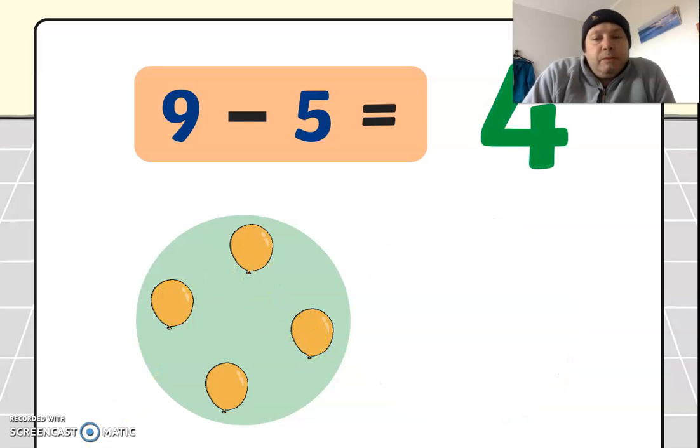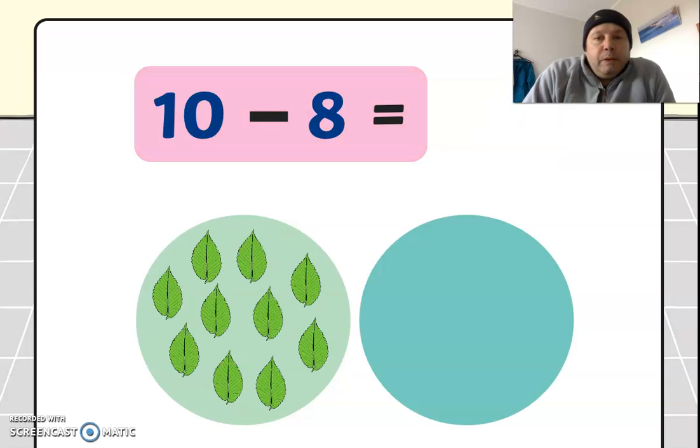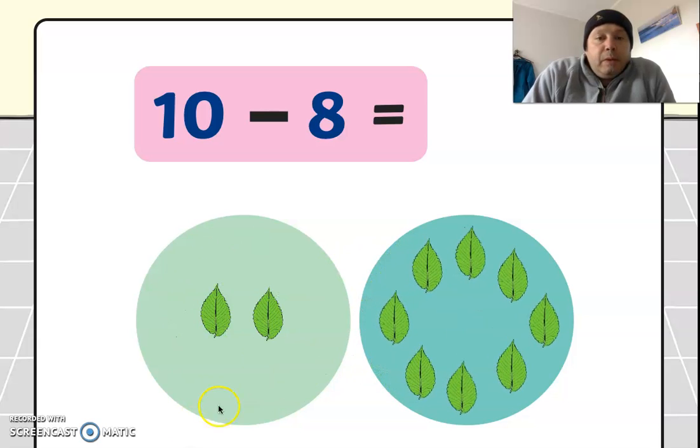Oh, we've got now ten leaves, one, two, three, four, five, six, seven, eight, nine, ten leaves. And it's asking us to take away eight leaves, here we go, one, two, three, four, five, six, seven, eight, and how many is left? Only now got two left.